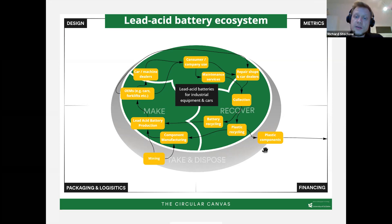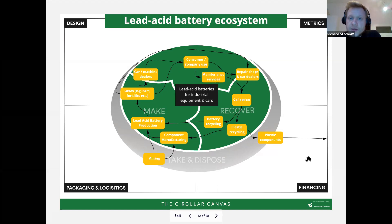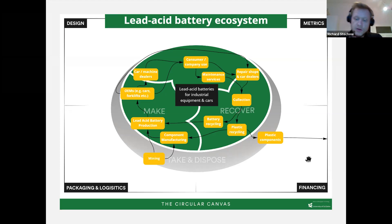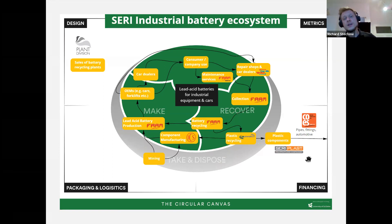Looking at how Seri Industrial has handled this, they have integrated a lot of activities into their corporate structure. The plant division, one of their first acquisitions, sells and builds battery recycling plants. The most important element is FAAM, which produces lead acid batteries and also handles battery recycling at production sites.